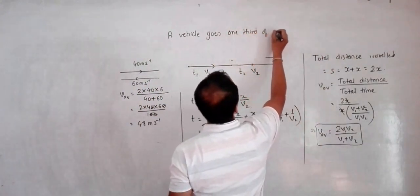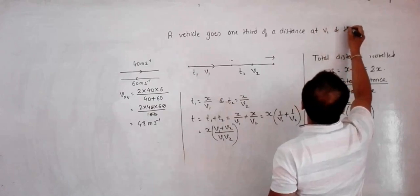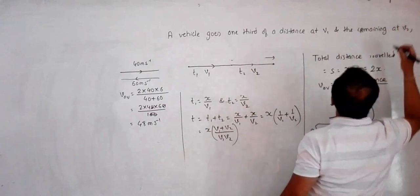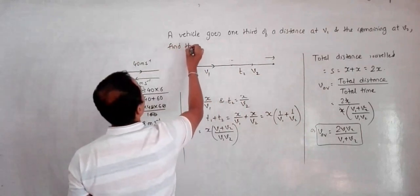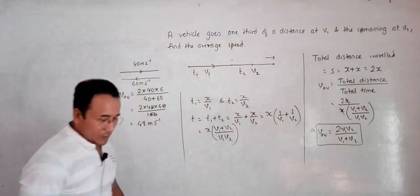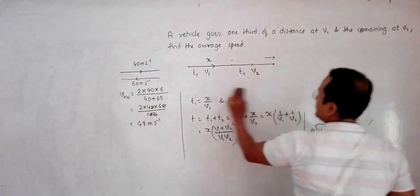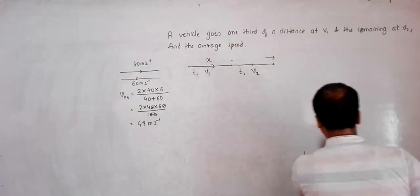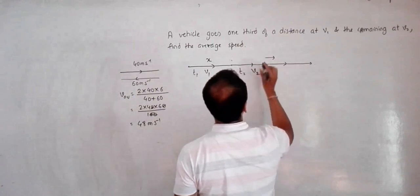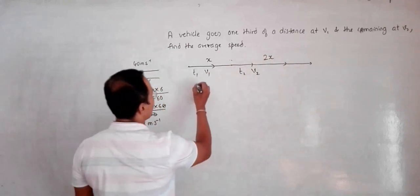Now let's alter the design slightly: a vehicle goes one-third of the total distance at v1 and the remaining two-thirds at v2. Find the average speed. In this case the first portion is x at v1 and the second portion is 2x at v2.